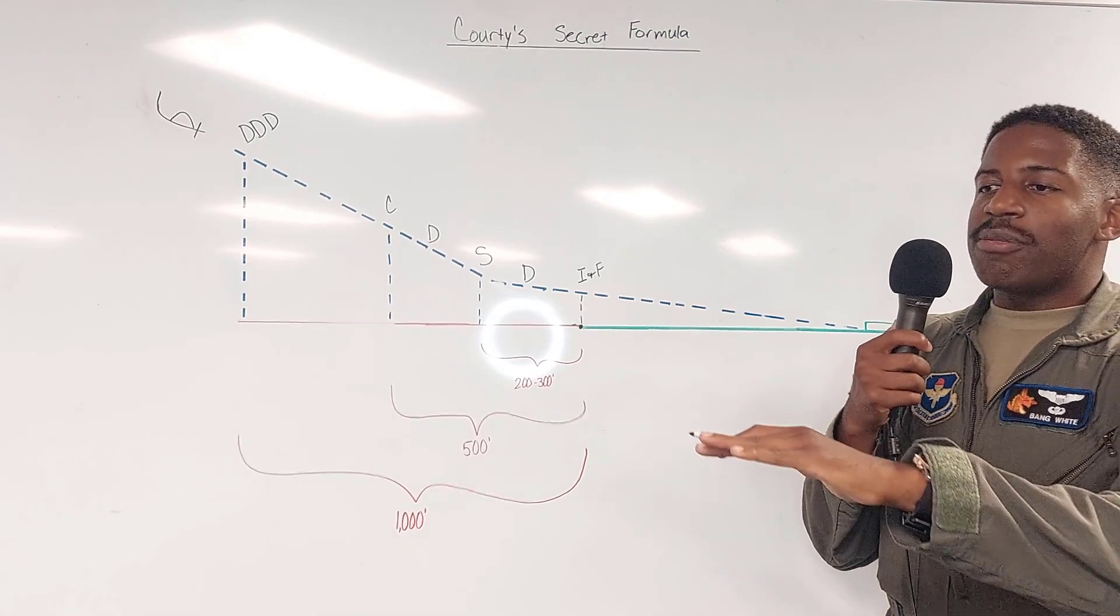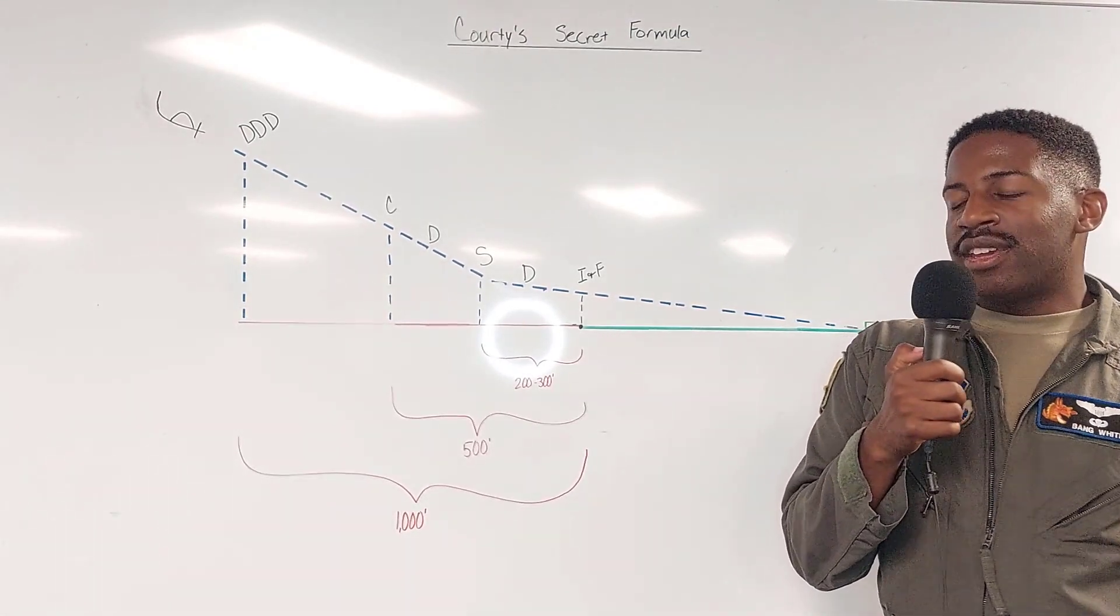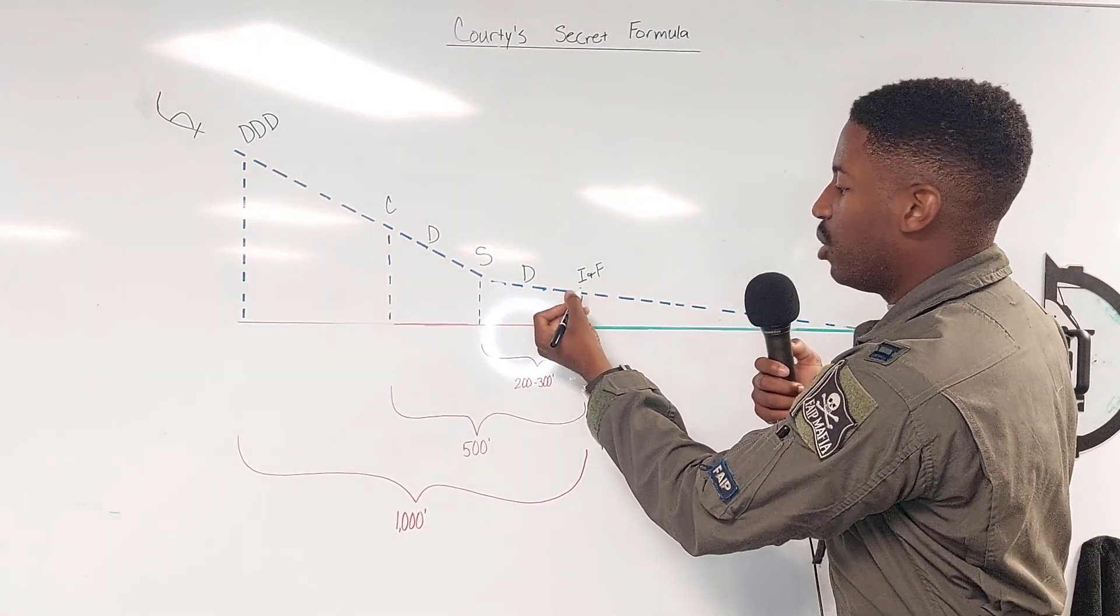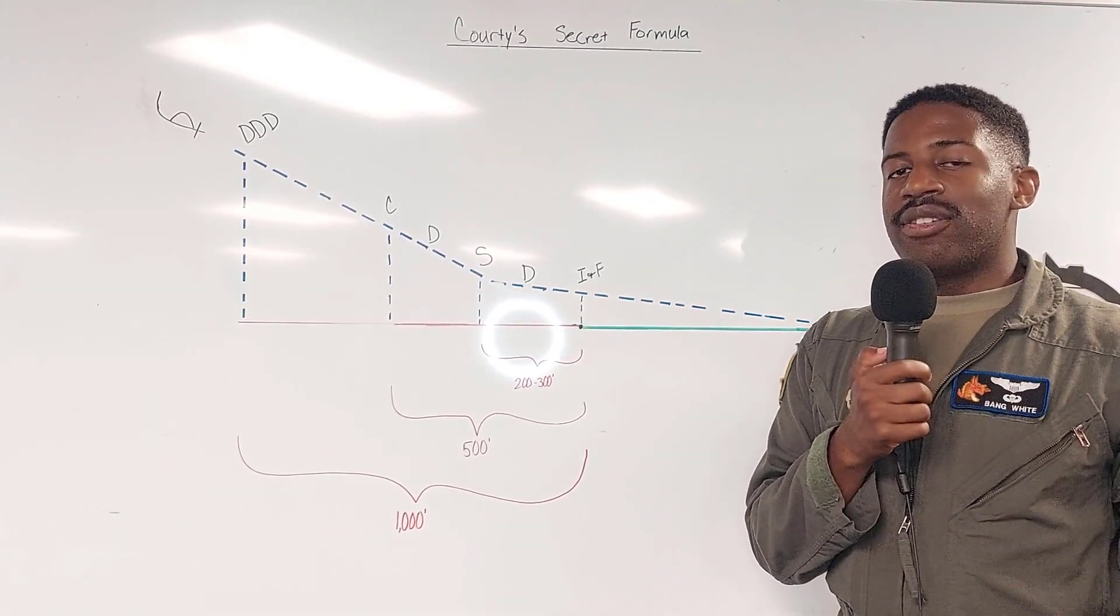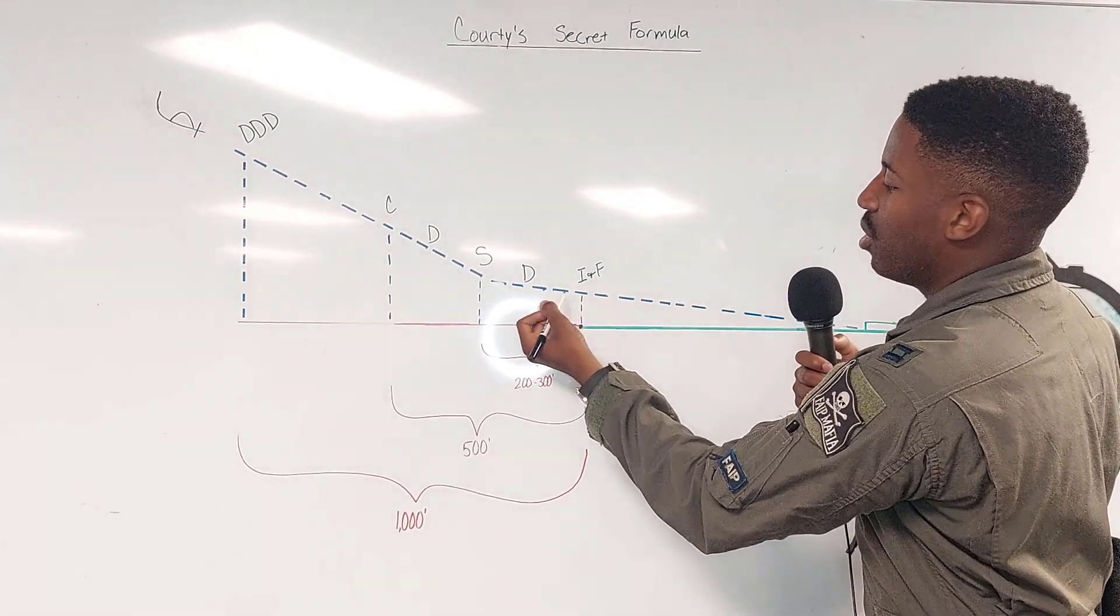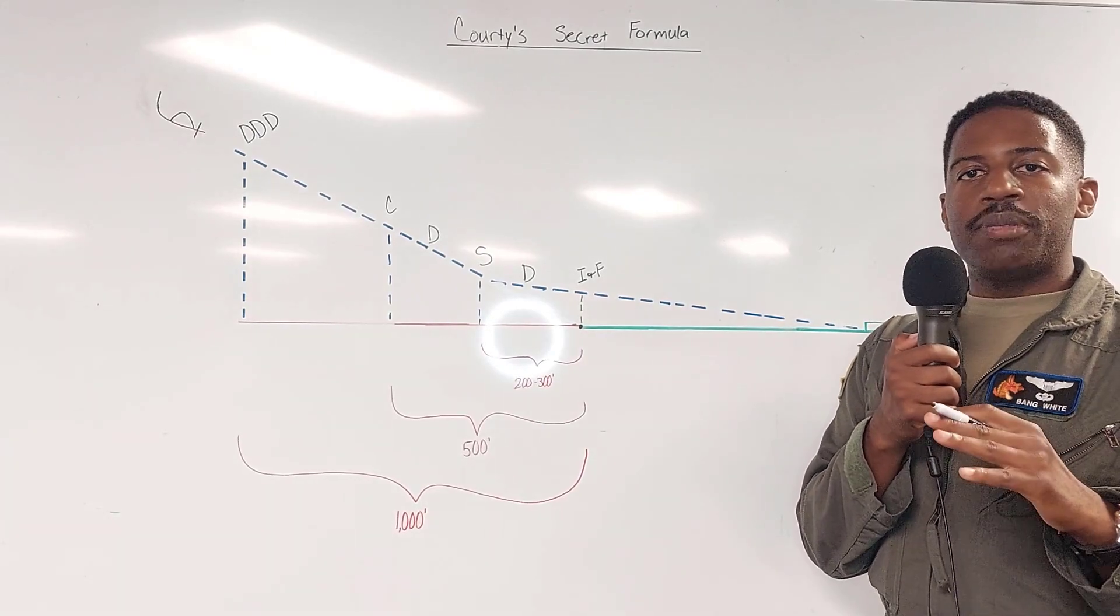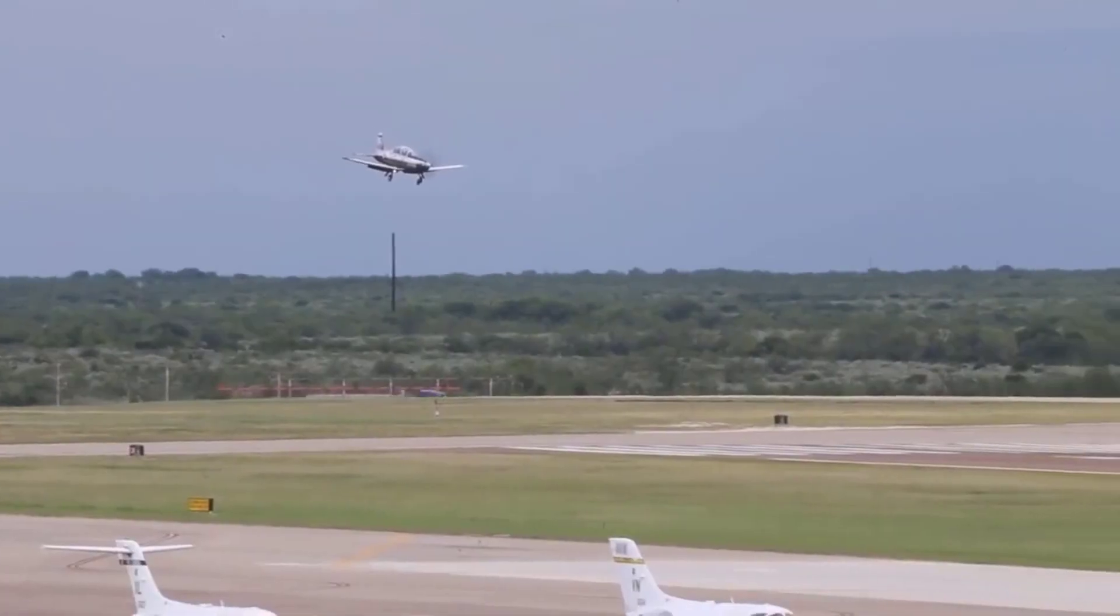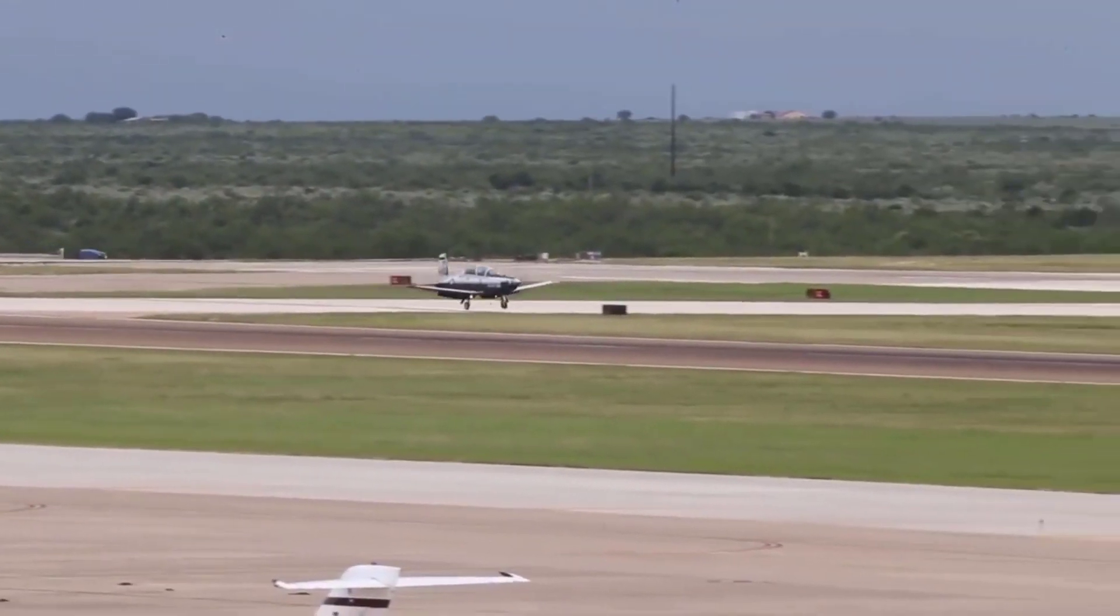The whole purpose of this is that we do not idle and flare before the threshold, because we do not want to touch down prior to the threshold. That's game over, you lost. Once we are past this threshold, doesn't matter, power comes back to idle. We pitch that nose up to seven to ten degrees nose high. You should be about 20 feet above the ground at this time.